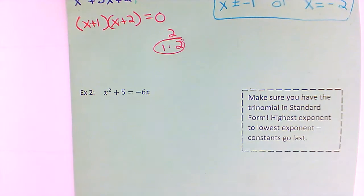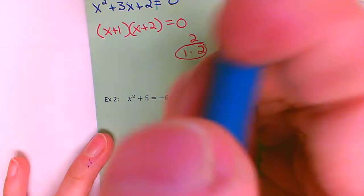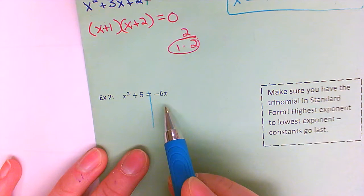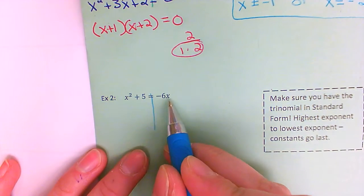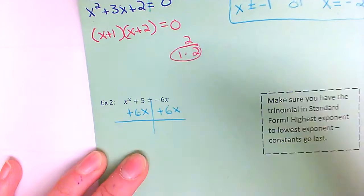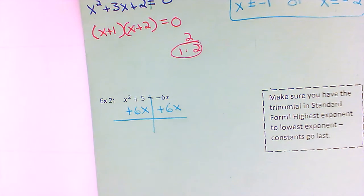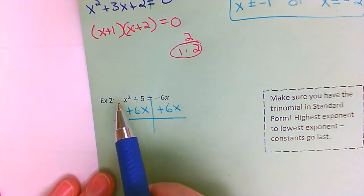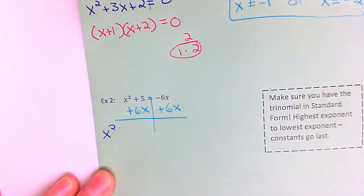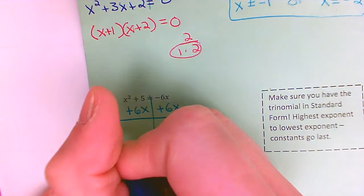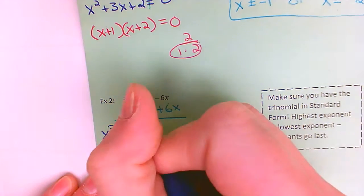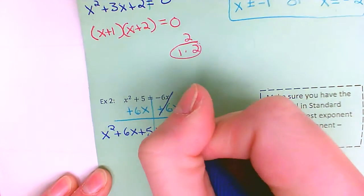Example two — same idea. I've got to move everything over to one side so that I have a zero on this side. The opposite of a negative six x is a positive six x, so I'm going to be adding it to each side of the equal sign. Be very careful — I want the left side in standard form: the highest exponent goes first, the term with the regular x goes second, and the constant goes last. So plus five equals zero.